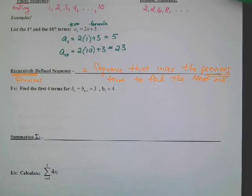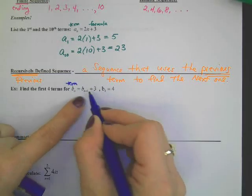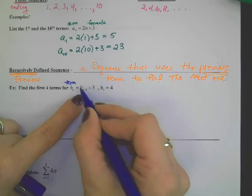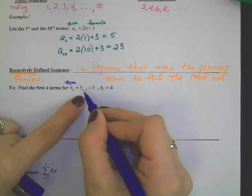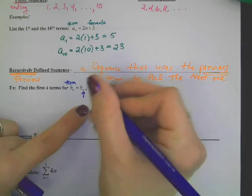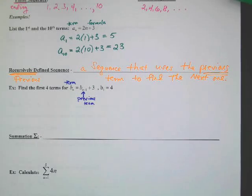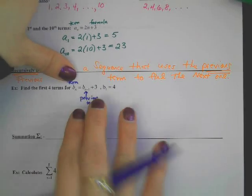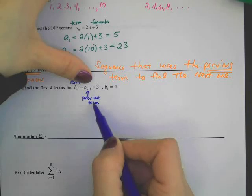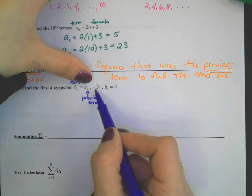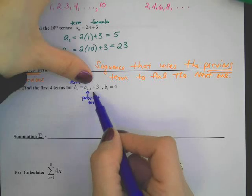The trickiest part is going to be the notation again. So let's take a look. B sub n means term. If B sub n is the term, what's B sub n minus 1? If that's n, then n minus 1 is the one that comes right before it — that's the notation for previous term. The easiest way to handle these is to figure out what this is trying to say in English: to find a term, take the previous one and add 3.